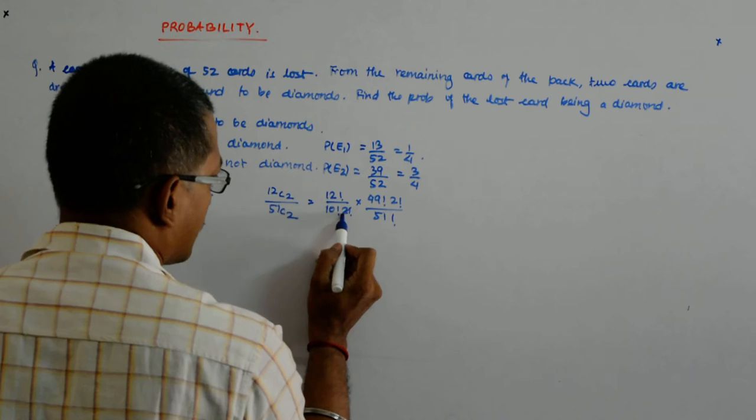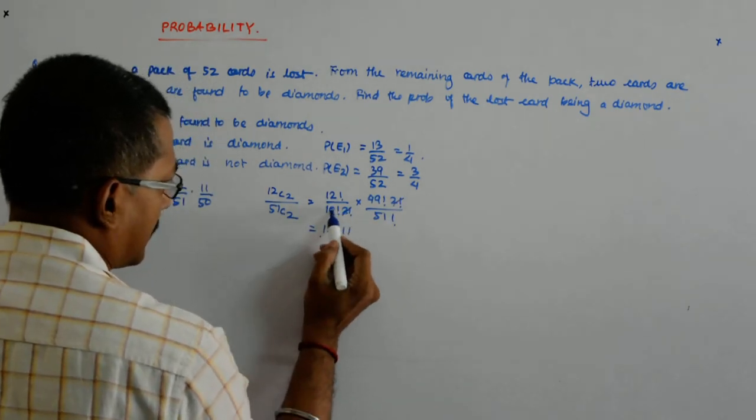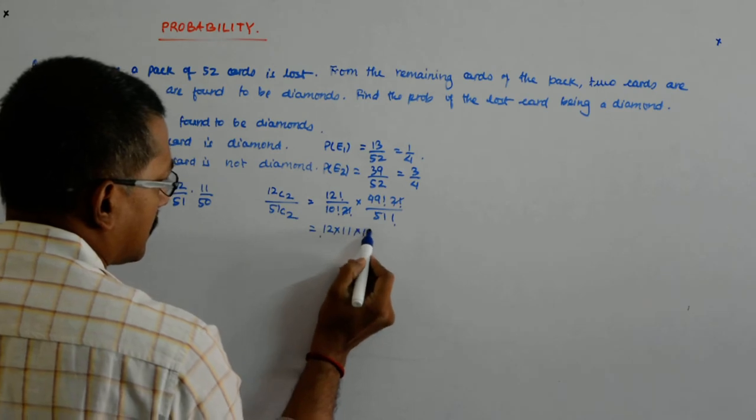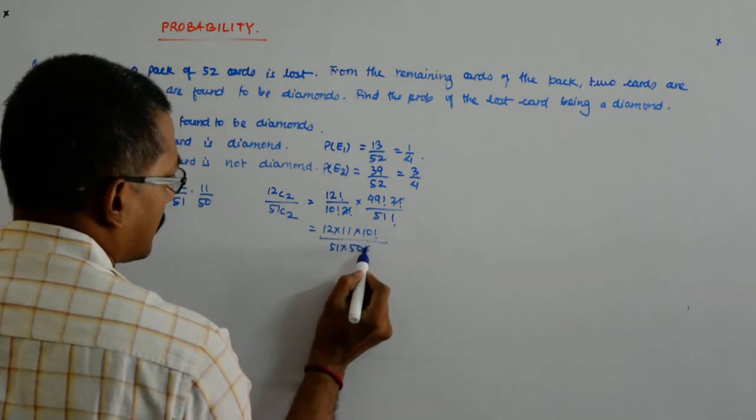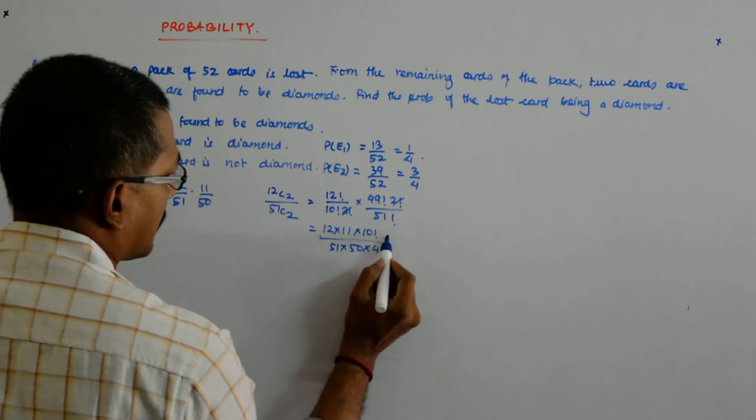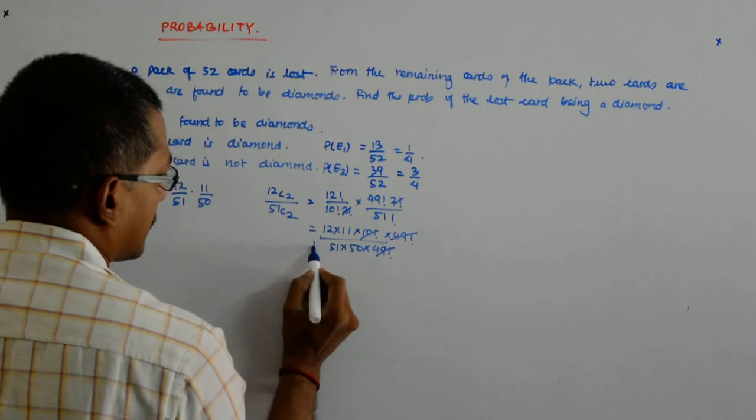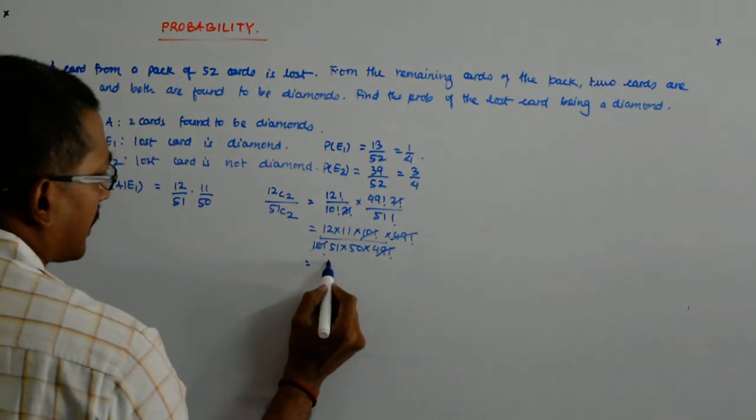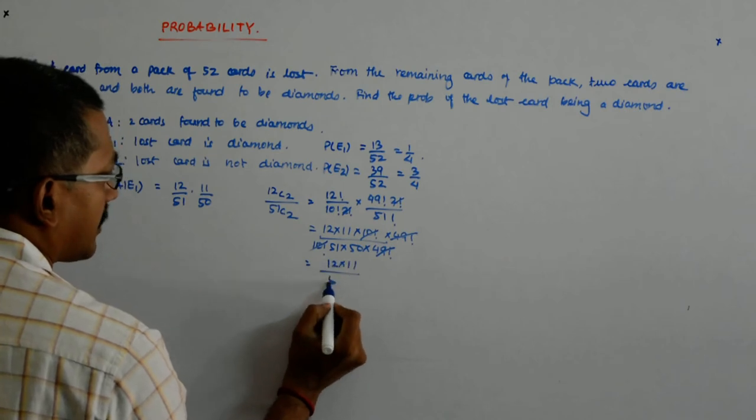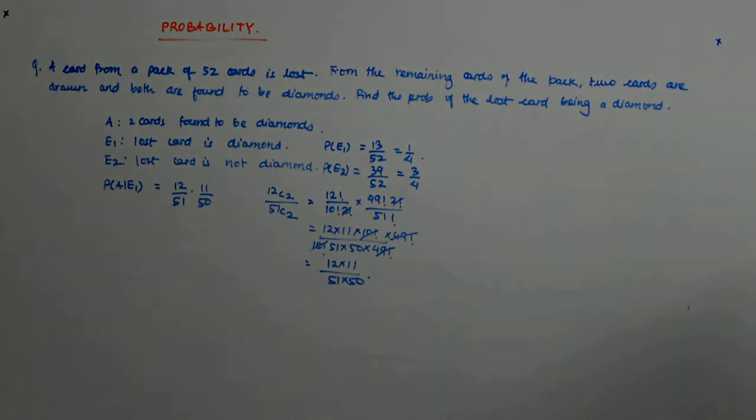Is it this? 2 factorial goes away. 12 into 11, 10 factorial cancels. 51 into 50 into 49 factorial, 49 factorial cancels, 10 factorial cancels. So this actually ultimately becomes 12 into 11 divided by 51 into 50. Ultimately it becomes that only.